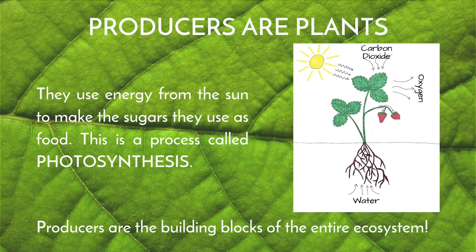Producers are plants. They use energy from the sun to make sugar, which they then use as fuel to grow and thrive. This happens through a process called photosynthesis. Photosynthesis is illustrated in the diagram on the right. In addition to producing sugars for the plant to grow strong, a byproduct of this process is oxygen, a very important compound for our survival. Producers are the building blocks of the entire ecosystem. Let me tell you about the other teams that depend on them.